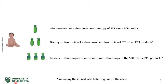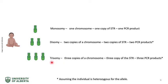In aneuploidy testing, the lab examines only the fetus's DNA. Standard aneuploidy testing amplifies STRs found on chromosomes 13, 18, and 21, as well as genes specific to the X and Y sex chromosomes. If the fetus is missing a somatic chromosome, there will be only one copy of the short tandem repeat and only one PCR product detected. If the fetus is disomic, two PCR products will be detected. If the fetus has an extra chromosome, there will be three copies of the STR and three PCR products.